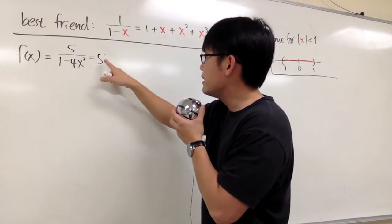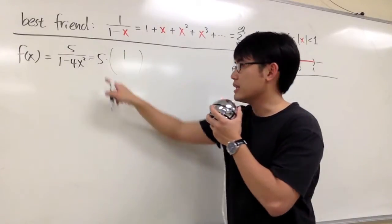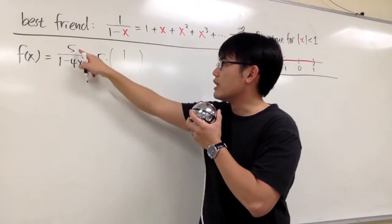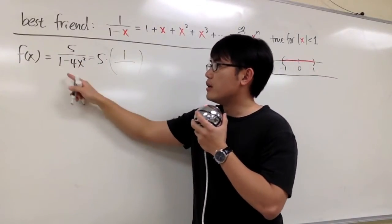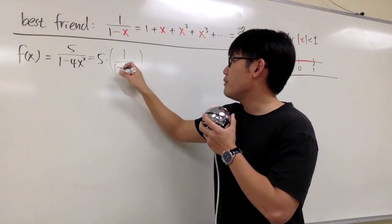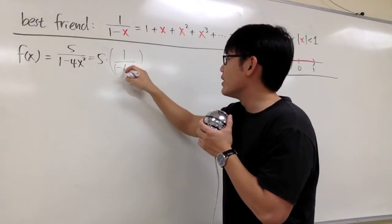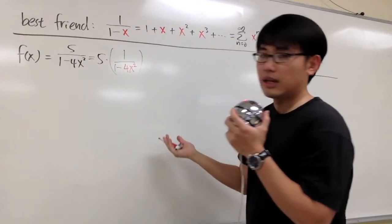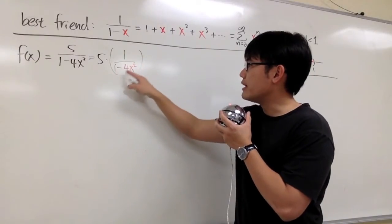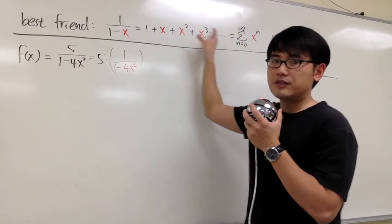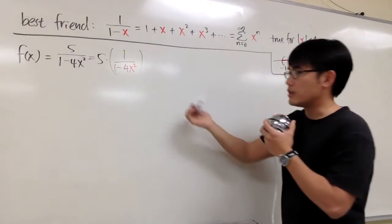We can say this is the same as 5 times 1 over 1 minus 4x squared — putting the 5 on the side so that 5 times 1 gives us the 5 on the numerator, and the denominator 1 minus 4x squared stays the same. This part, 1 over 1 minus 4x squared, is exactly where we can use our best friend by plugging 4x squared into x.